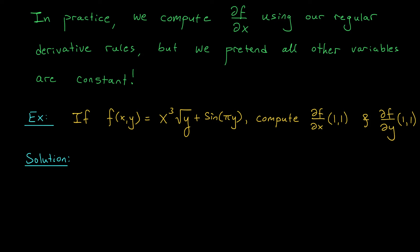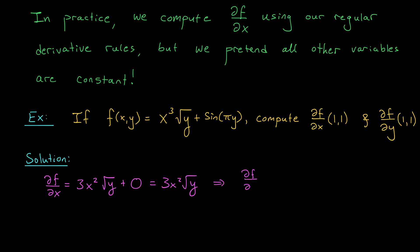For our first example, consider f of xy equals x cubed root y plus sine of pi y. We want to compute the partial derivatives with respect to x and y evaluated at the point (1, 1). Let's start with the partial with respect to x — we differentiate with respect to x, treating y as a constant. When I differentiate the first term, I get 3x squared, and root y is constant so I leave it alone: 3x squared root y. The derivative of the next term with respect to x is 0, since sine of pi y is a constant. So my partial with respect to x is 3x squared root y. At the point (1, 1), that gives me 3 times 1 squared times root 1, which is 3.